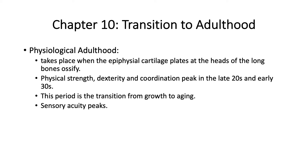Chapter 10 is Transition to Adulthood. This is coming out of adolescence and entering physiological adulthood. Adulthood actually begins with the ossification of the epithesial cartilage plates at the heads of the long bones. Once growth and height stop, that's when we transition from childhood to adulthood. This happens towards the end of adolescence. It's the entrance into the peak period. Physical strength, dexterity, and coordination peak about early 20s right after entry into adulthood.